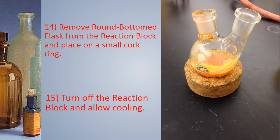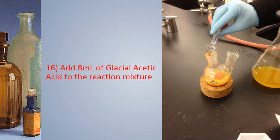We may then remove the round bottom flask from the reaction block and place it on a small cork ring. We turn off the reaction block and allow cooling. The next step is to add 8 milliliters of glacial acetic acid to the reaction mixture.